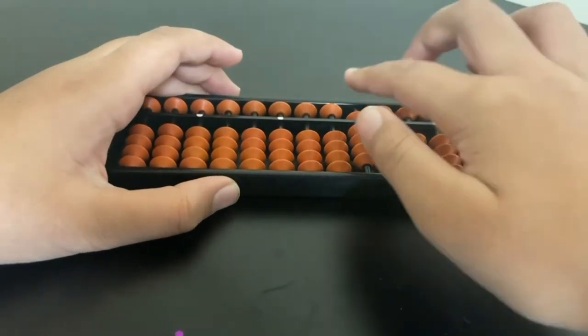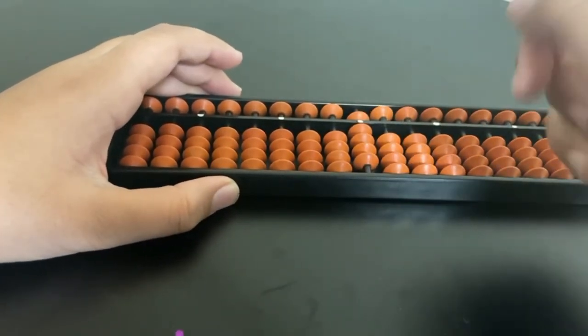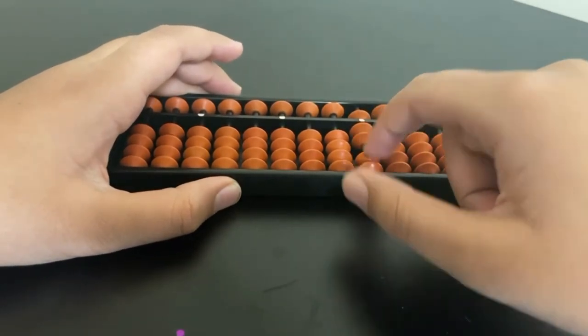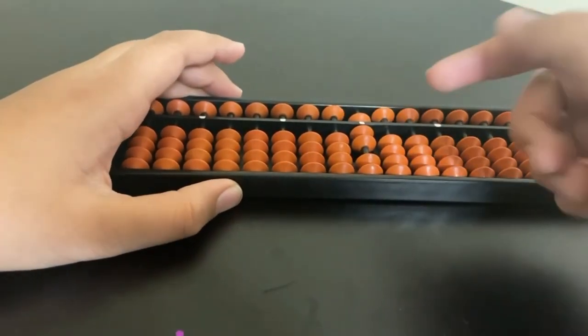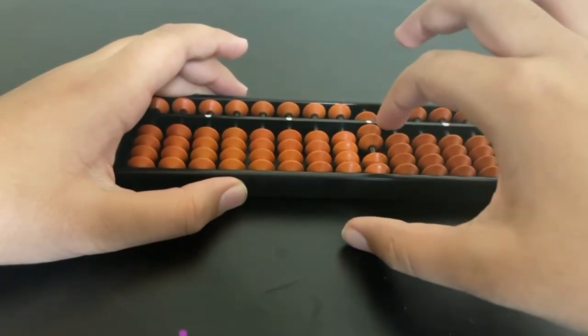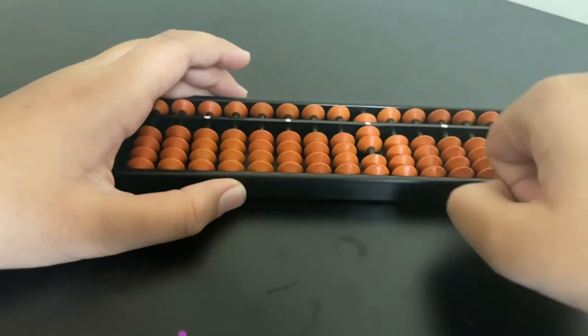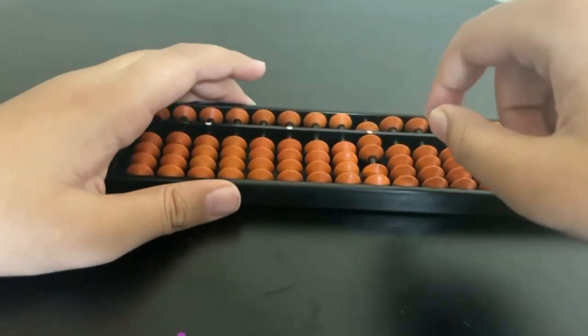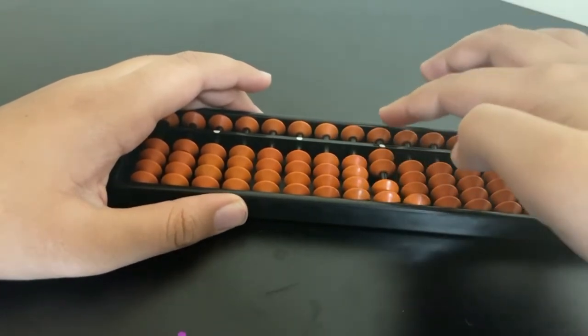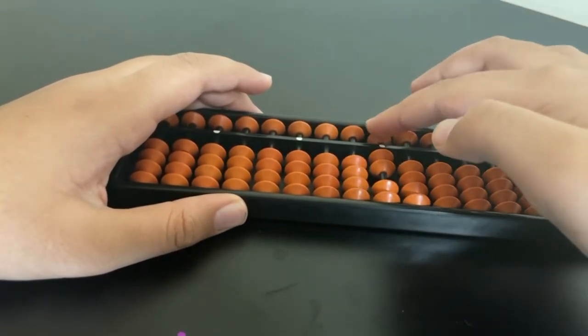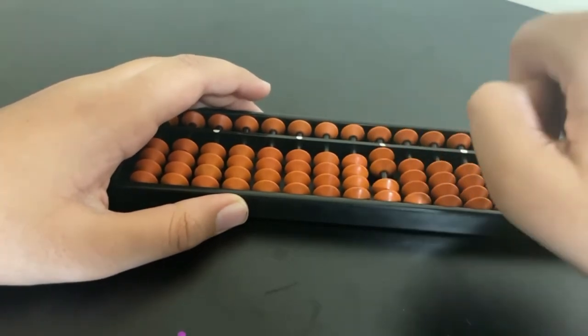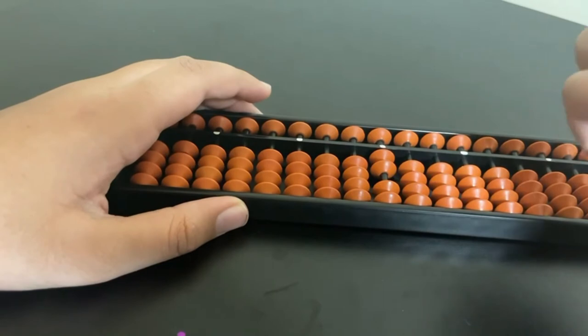So for example, if I subtracted two, this would be seven, because on the top bead there's five and then two on the bottom. Five plus two is seven. Then let's do minus five. This would be two because there's no five, or the top bead is not like this and it's not a value of five, so it would be one plus one equals two.